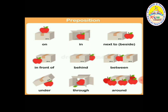Between: the apple is between the boxes. Under the box — the apple's position is under the box. Through the box. Around the box — the apple is around the box.